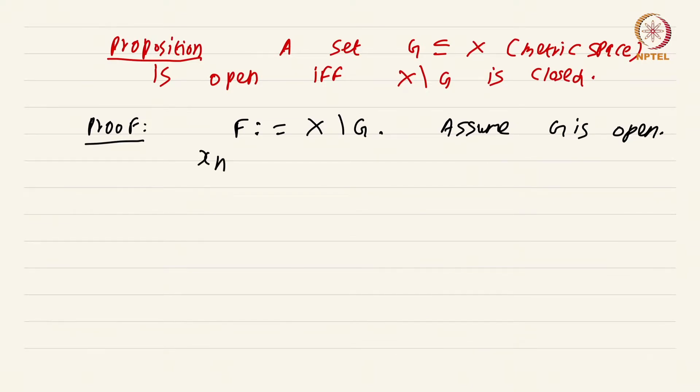Our goal is to show that F is closed. So let x_n in F be a sequence such that x_n converges to x. We have to show that x is also an element of F.